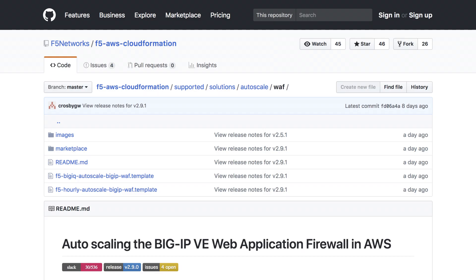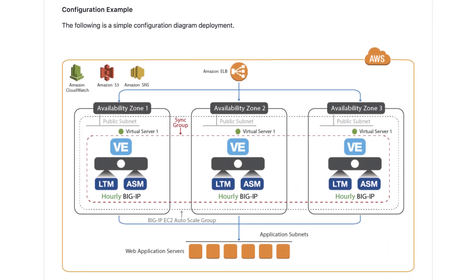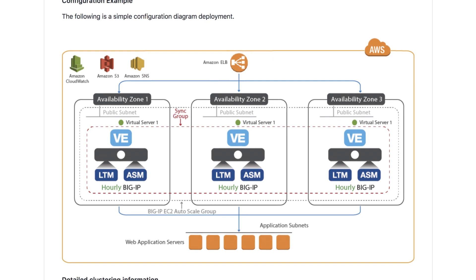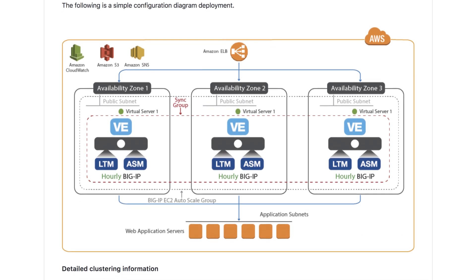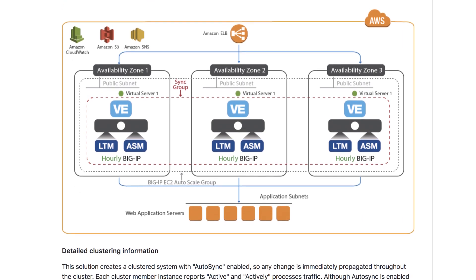Let me take you through an autoscale WAF solution we deployed using an F5 AWS CloudFormation template. When launched, the template implements AWS EC2 instances, BIG-IP VE instances, an AWS autoscaling group, AWS CloudWatch alarms, S3 buckets, and various other resources.